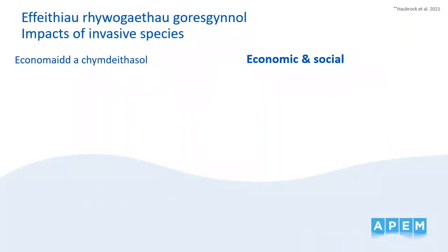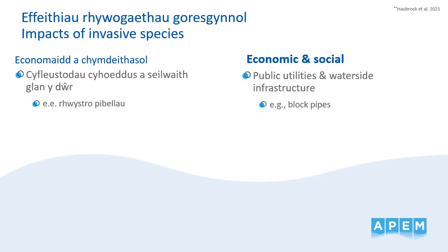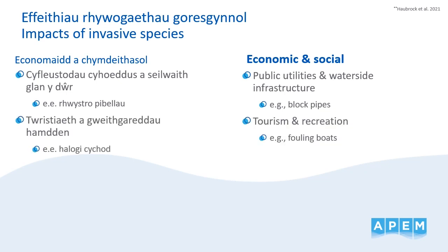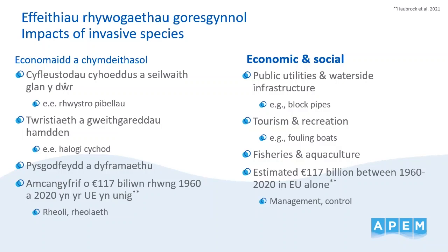Moving on to the economic and social impacts of INNS. INNS can cause damage and disruption to public utilities and waterside infrastructure, for example by blocking pipes and clogging drains. They can disturb recreational activities and have a negative impact on tourism, for example by fouling boats. INNS can impact fishing and aquaculture by preying on or out-competing commercially important species or smothering equipment. A recent paper estimated that in the EU, 117 billion euros have been spent between 1960 and 2020 on the management and control of INNS. Another recent paper has also estimated that INNS cost £4 billion annually to the UK economy.